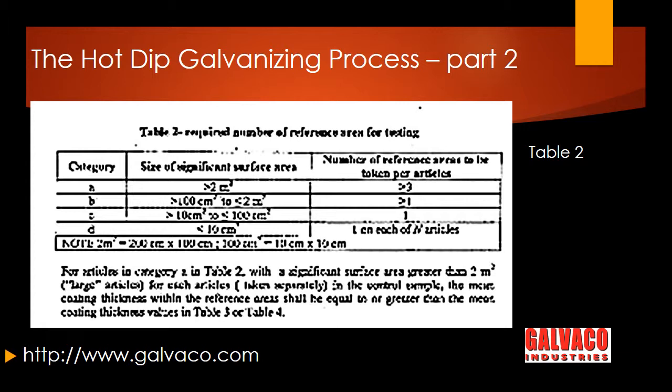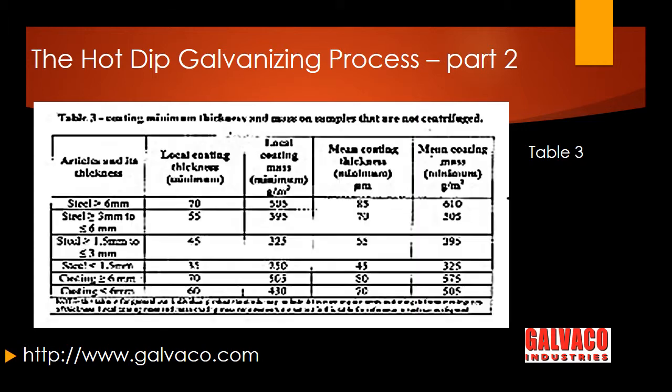Let's focus on part 4, table 2: required number of test reference areas for testing. This table tells us about the number of test areas — any article above 2 meters square would require at least 3 samples. Any article above 100 centimeters square or less than 2 meters square would require 2 samples, and so on.